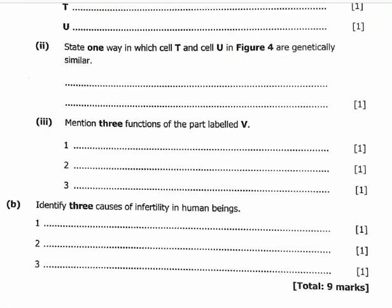Question B asks us to identify three causes of infertility in human beings. The first cause is hormonal imbalances, which can interfere with ovulation or sperm production. Hormonal imbalances occur when there is too much or too little of a specific hormone in the body, causing a variety of health issues. The second cause is structural problems in the reproductive organs that prevent fertilization or implantation.